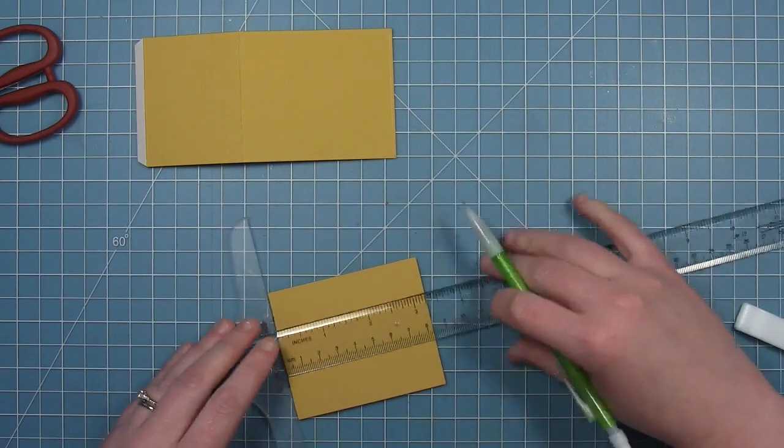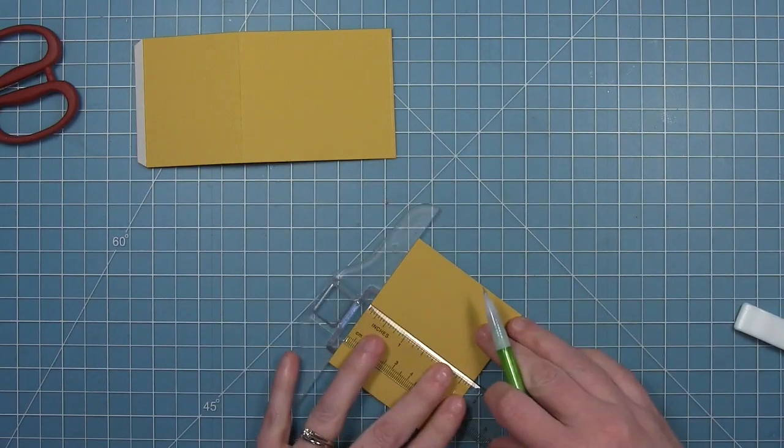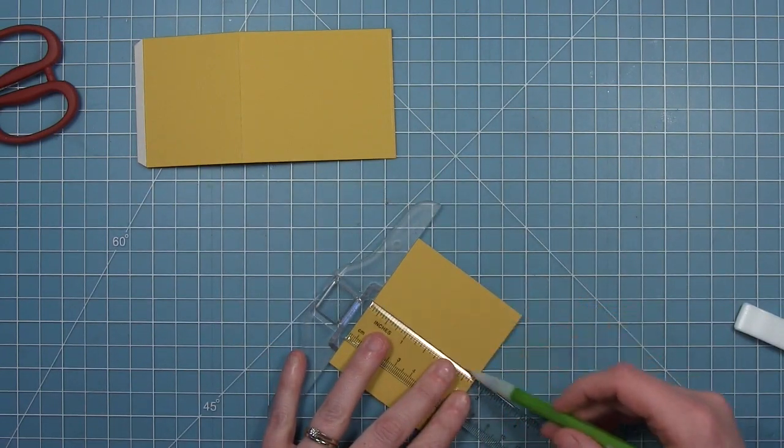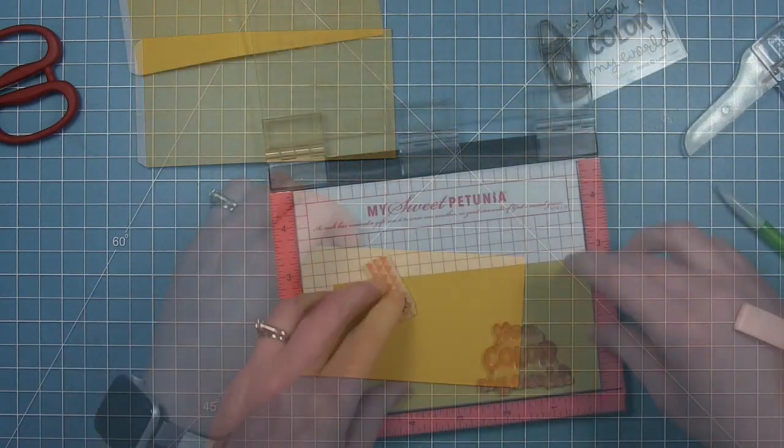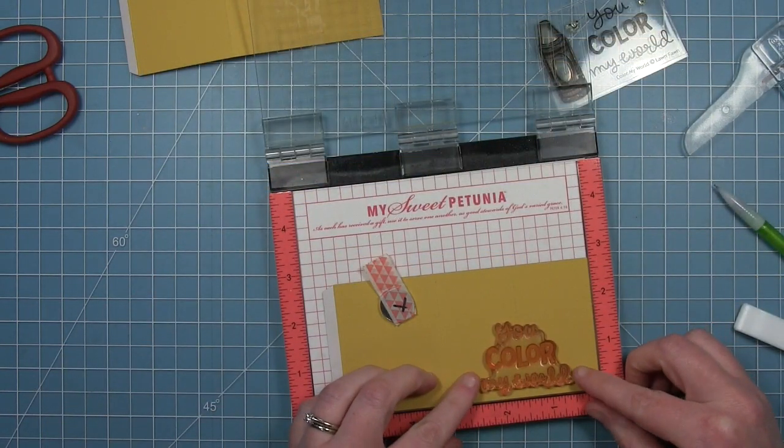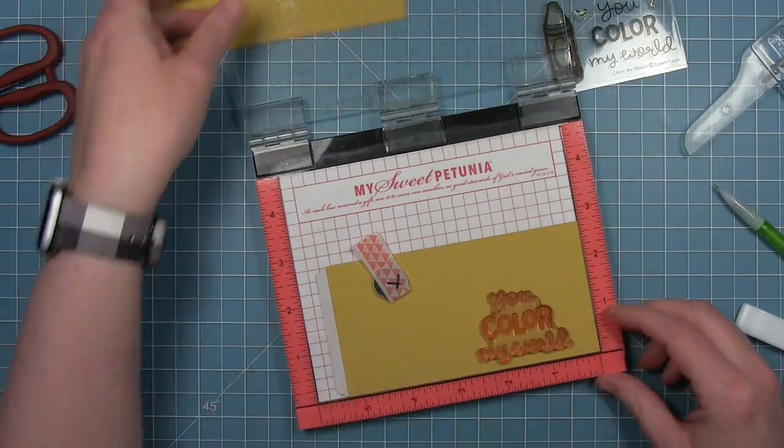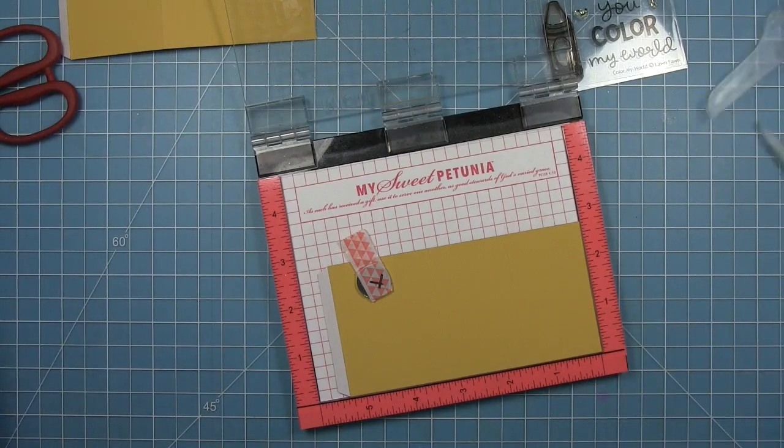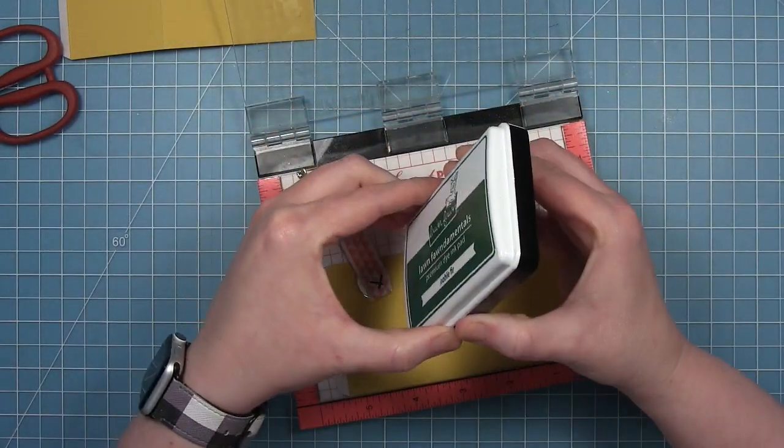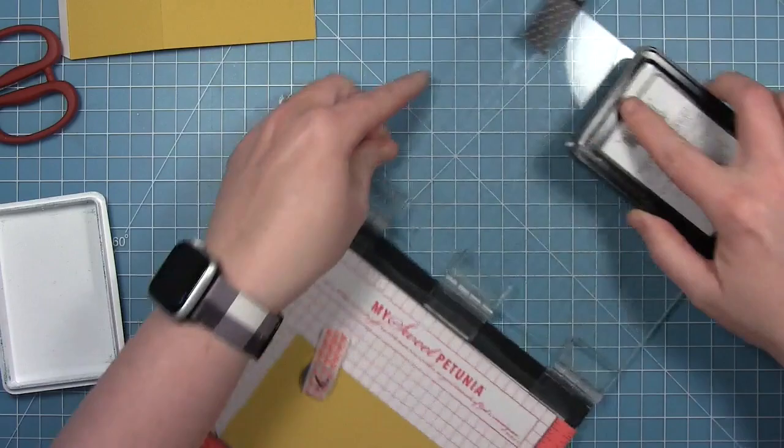I'm going to use my T-square ruler here just to draw a line, and this is going to be my guide for finding the center. So I'm going to go ahead and stamp my sentiment, and I'm going to stamp that pretty close to the bottom there.